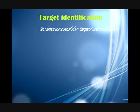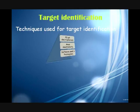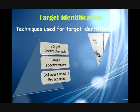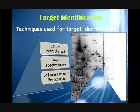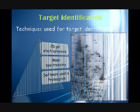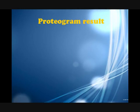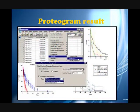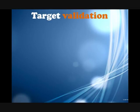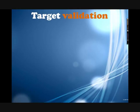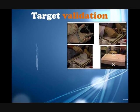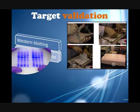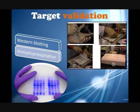Target identification could be done by using Western blotting or immunoprecipitation. It evaluates the role of target protein in signal transduction.